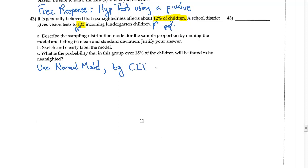So what it's really asking for is use normal model by the central limit theorem. I'm going to assume that my sample p is near to 0.12 because that nearsightedness affects about 12%. So there's my mean in the center of my model.